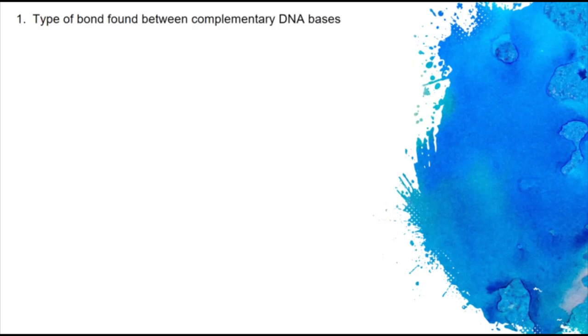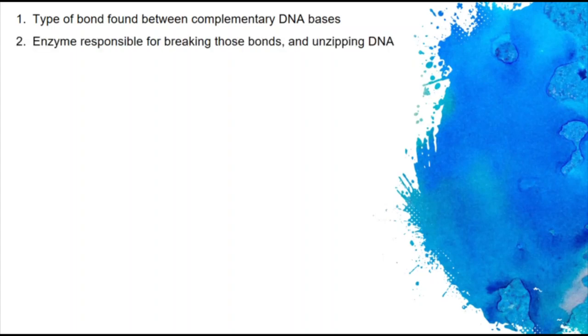Question number one. What is the type of bond found between complementary DNA bases? So between the adenine and thymine and the cytosine and guanine — what's the name of those bonds?